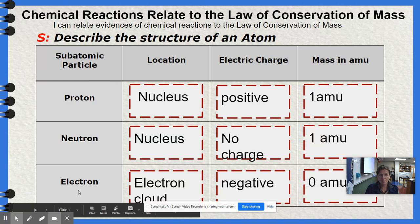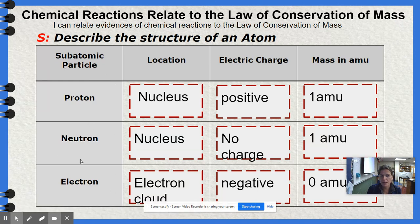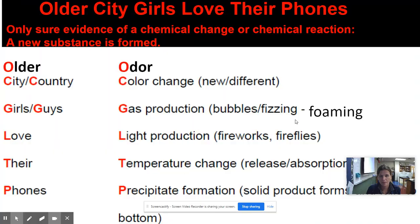So to describe the structure of an atom, remember you want to name the three subatomic particles and talk about three things: their location, their electrical charge, and their mass.